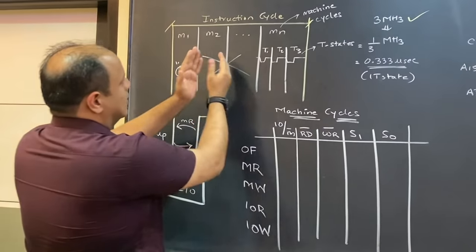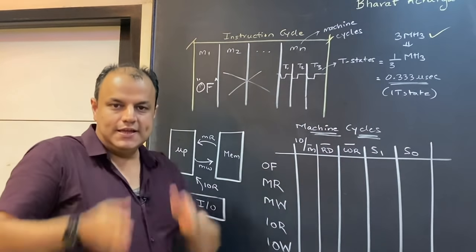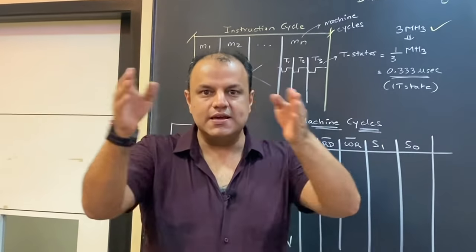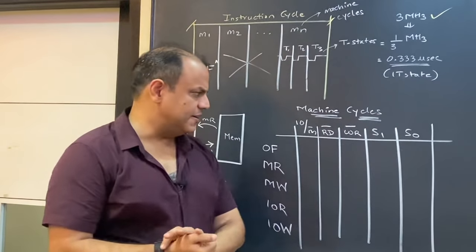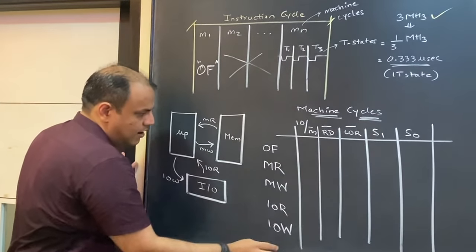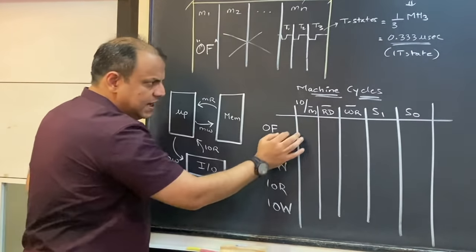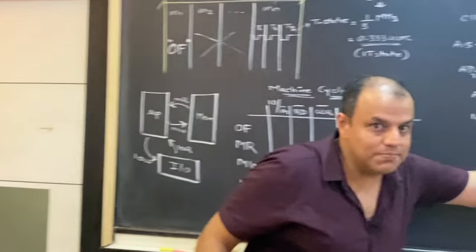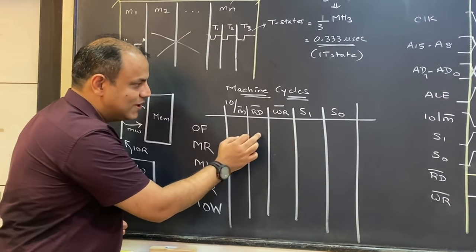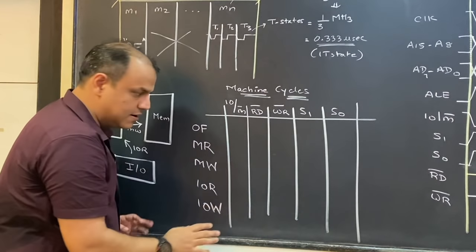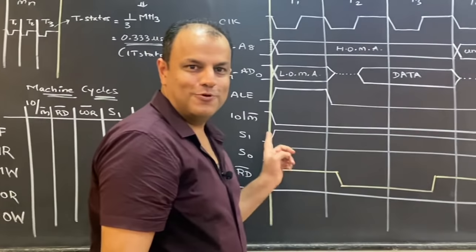Clock pulses को T states क्यों बोलते हैं, समझ में आया। एक instruction cycle में अलग-अलग machine cycles होते हैं, एक machine cycle में अलग-अलग T states होते हैं। T states are a part of machine cycles, machine cycles are a part of instructions। अब इनको draw करना सीखेंगे — पहले हम इन 5 main machine cycles का एक table बनाएंगे। Table पे सीखेंगे: opcode fetch में कौन सा signal high होना चाहिए, कौन सा low।